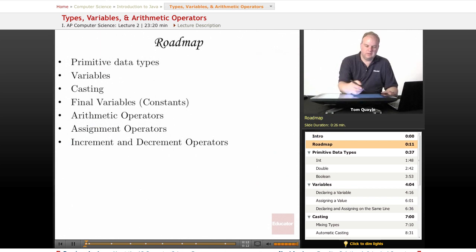In this lesson, we'll first talk about primitive data types, which are built-in data types. We'll talk about variables, then casting, and something known as final variables, which is how Java implements constants. We'll look at the arithmetic operators, the assignment operators, and finally the increment and decrement operators.